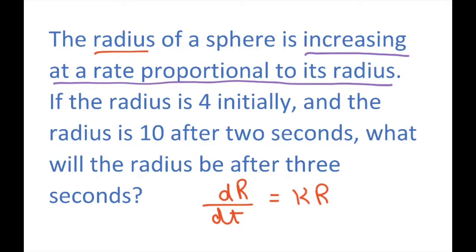Now we're going to put all the terms that contain r on the left. So this is going to end up being dr divided by r and then just move this dt up here so you have k dt.